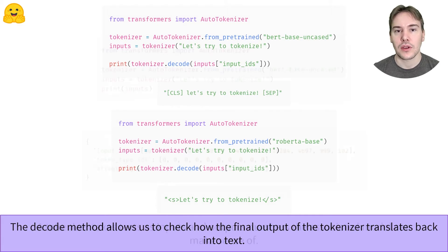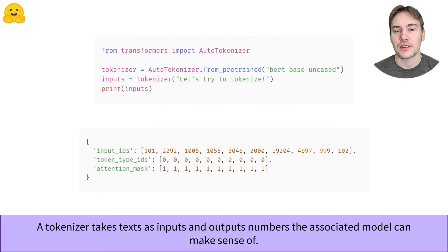Now that you know how the tokenizer works, you can forget all those intermediate methods and only remember that you just have to call it on your input texts. The outputs of the tokenizer don't just contain the input IDs however. To learn what the attention mask is, check out the batch inputs together video. To learn about token type IDs, look at the process pairs of sentences video.